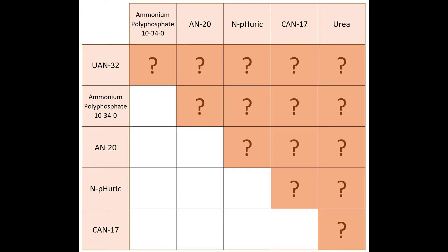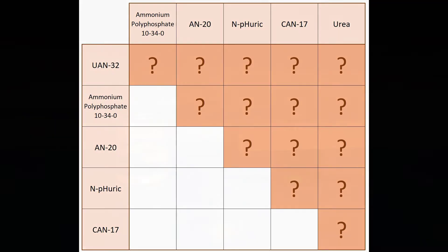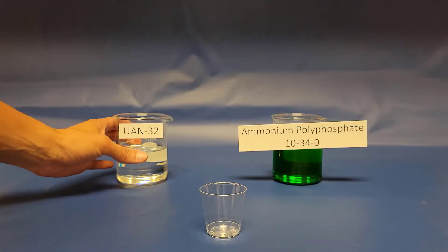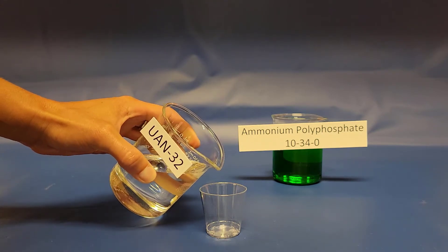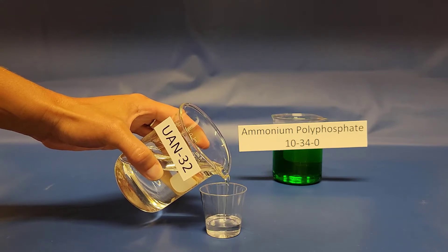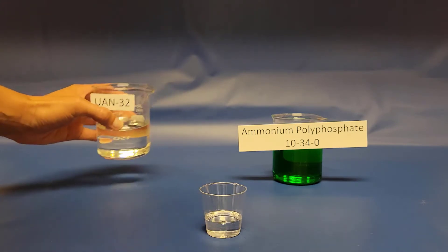The first one we're going to be testing today is urea ammonium nitrate, or UAN32. Then we're going to be looking at ammonium polyphosphate, ammonium nitrate AN20, urea sulfuric acid which is infuric, calcium ammonium nitrate CAN17, and then urea. So we'll mix these together and see what we find. Here are the first two fertilizers we'll be mixing together — remember that these are concentrated fertilizers mixed at about 50/50.